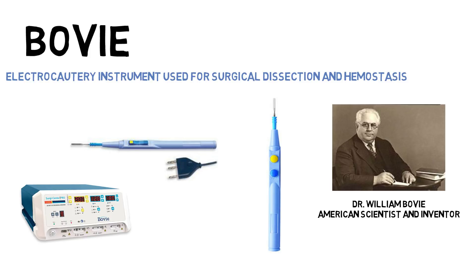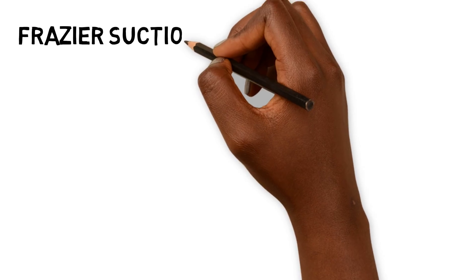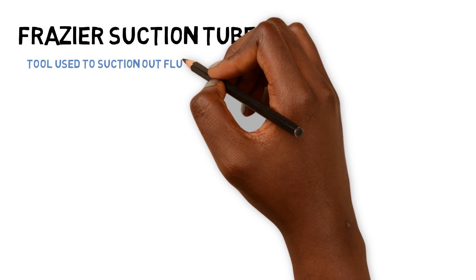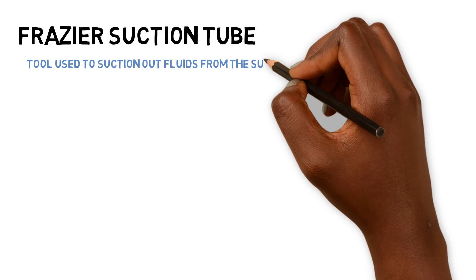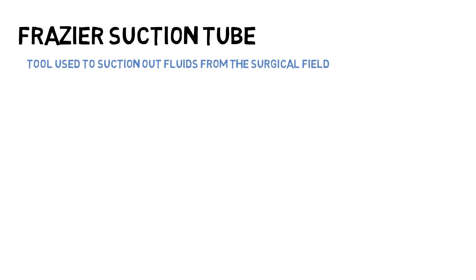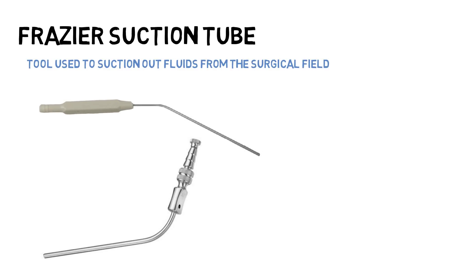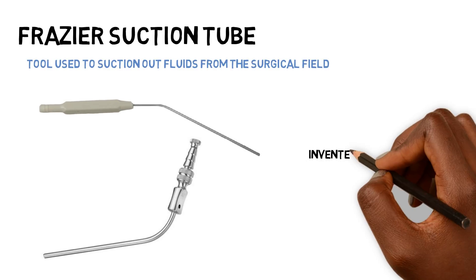Lastly, there is a Frasier suction tip. This is a tool used to suction out fluid and blood from a surgical field. This is usually connected to a tube and canister to collect the fluid for disposal.